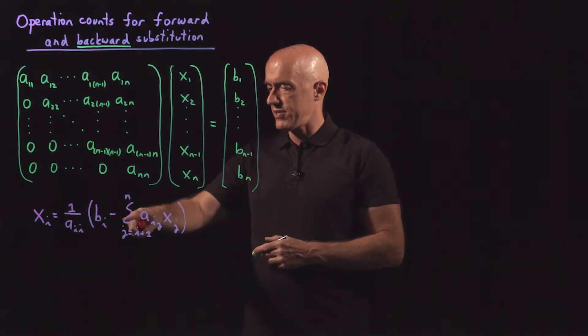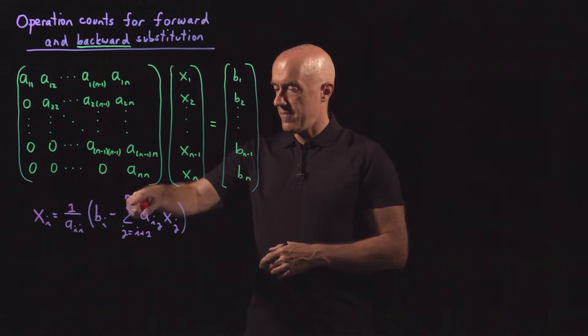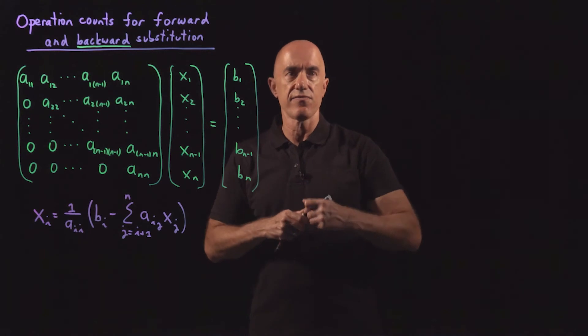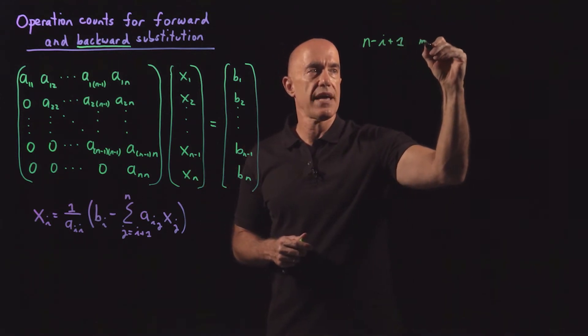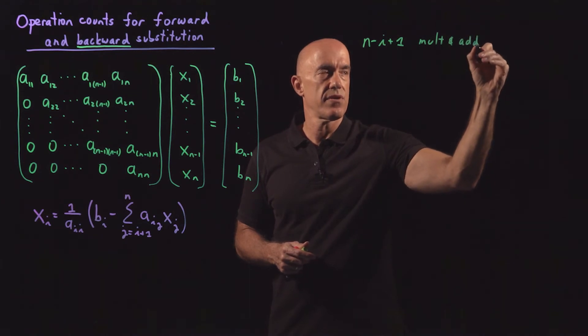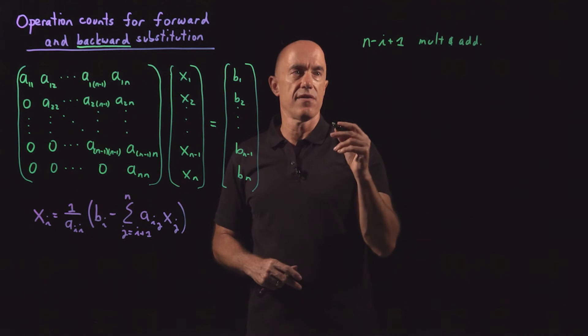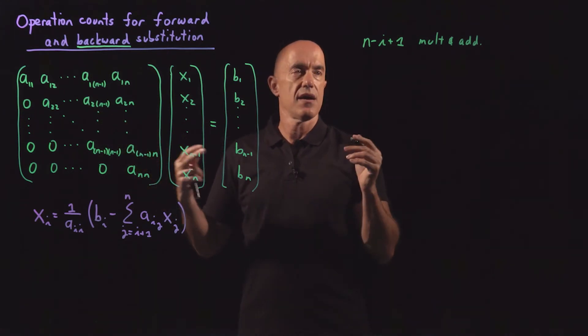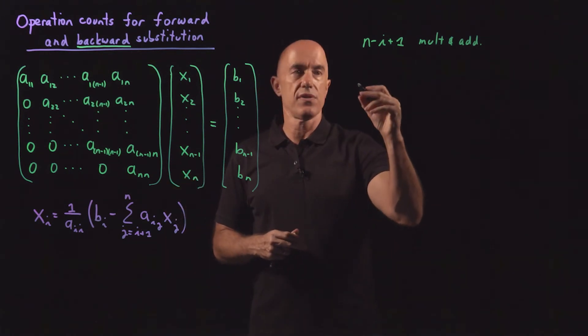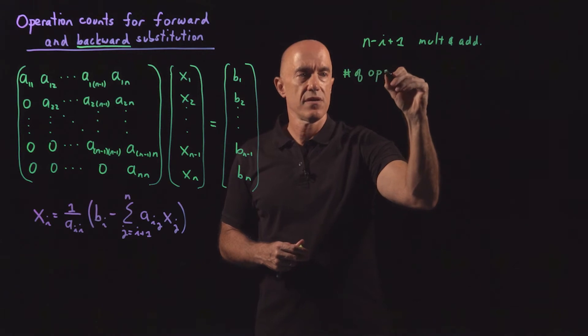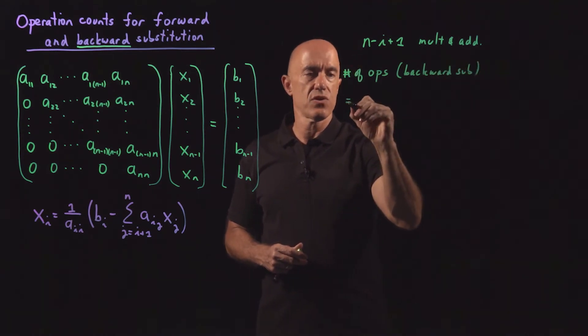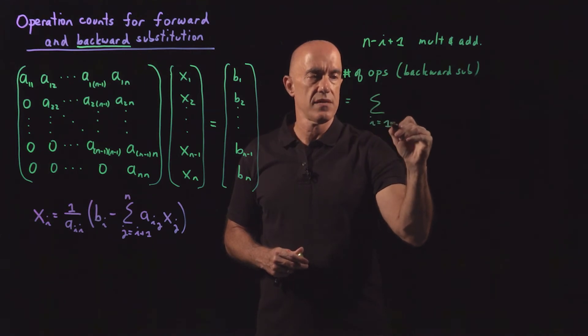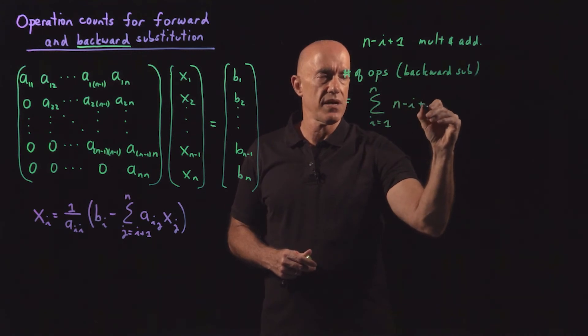Okay, so if we want to count the number of operations, here we have n minus i multiplications. And then another multiplication here if we include that. So we have n minus i plus 1 multiplications. And also additions together, right? So that's for each element of each row i. And then we have n such rows. So the number of operations for backward substitution would be equal to the sum from i equals 1 to n of this n minus i plus 1.